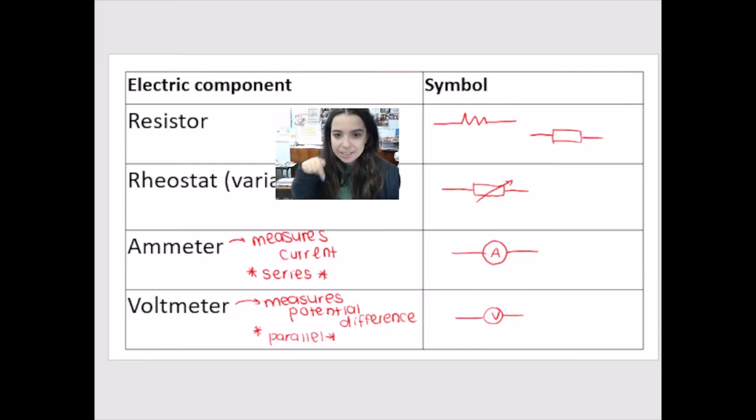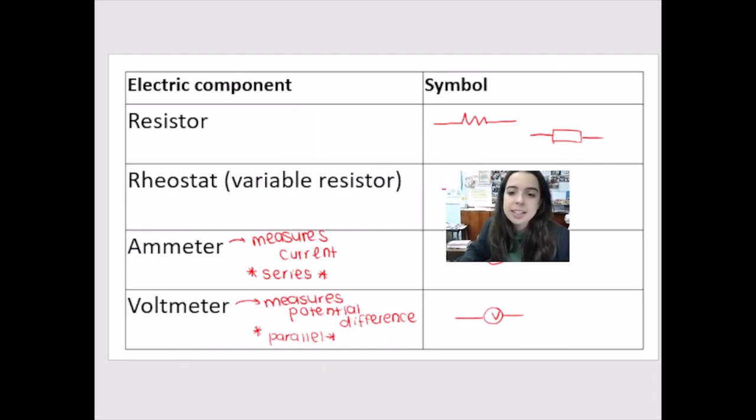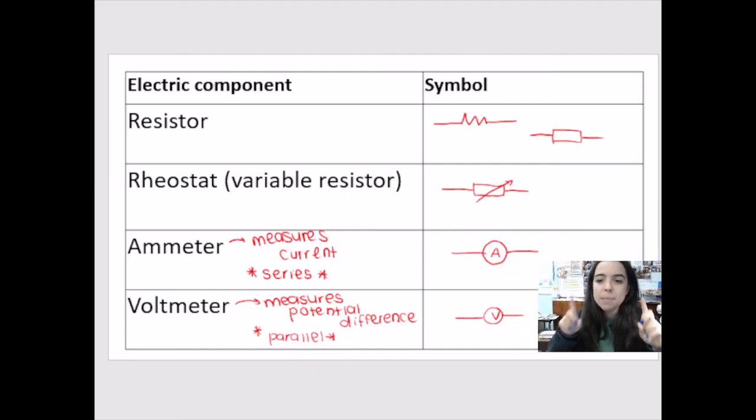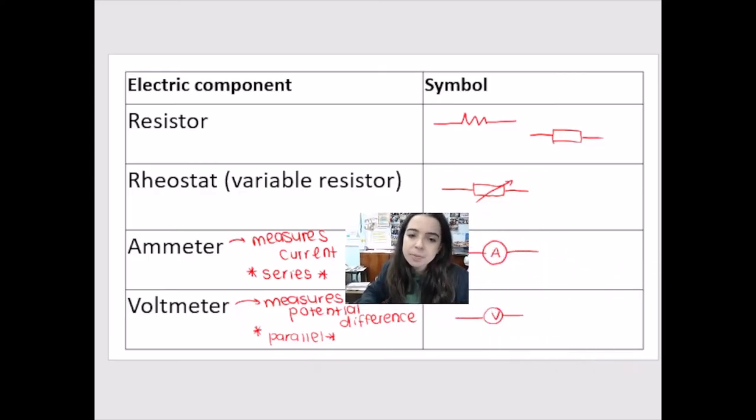Now, an ammeter down here versus a voltmeter. Ammeter, you can see a circle with the A in the middle. It's an ammeter. Ammeters measure current. Ammeter, ampere. Voltmeters measure potential difference or voltage, V. And I wrote here, if you can see, I wrote series and I wrote parallel for each of them. Ammeters measure the current, and they are connected in series.